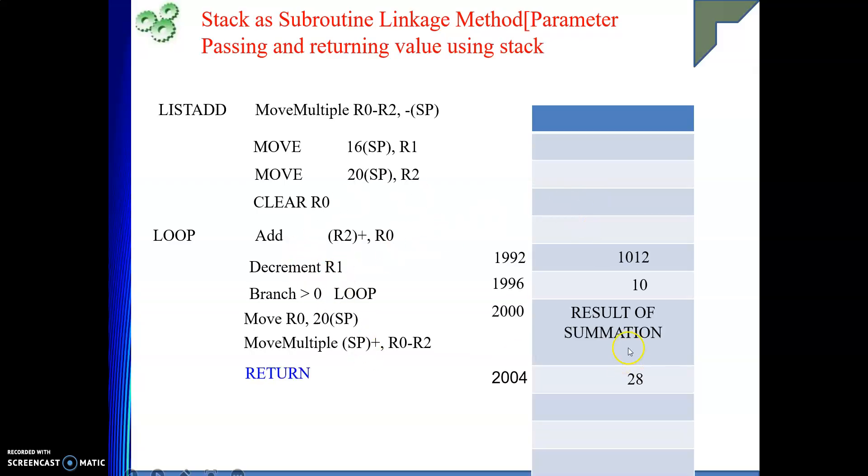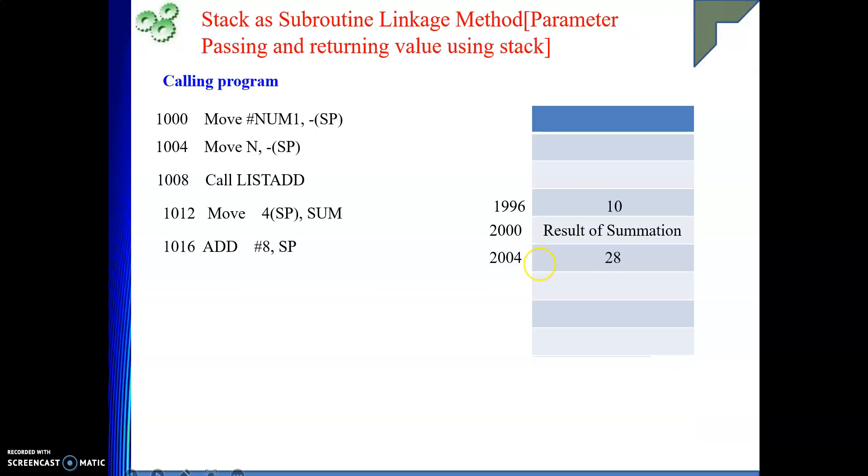So, when you execute return instruction, this value will be popped into the processor register PC. So, this will be taken into PC. Now, you will come back at 1012. After coming from function, you are interested in your return value. Where is your return value in the stack? Here. And where is your SP? At 1996. From this distance, at how much distance your return value is there? At distance 4. You could have stored it here also. There is no harm in that. Just need to remember, return values are stored just below your return address. So, here 4 SP will give me my value. That I will give to my variable sum.